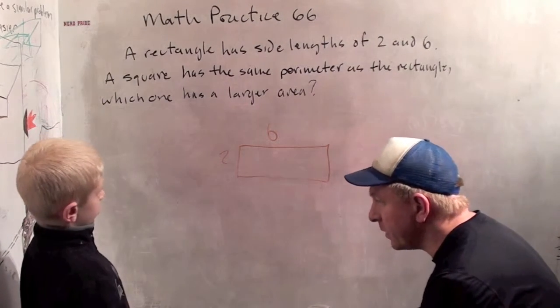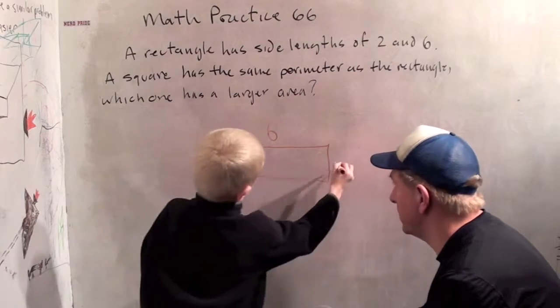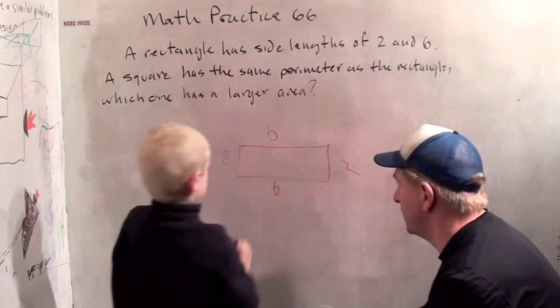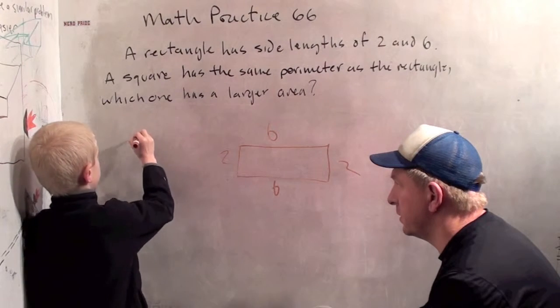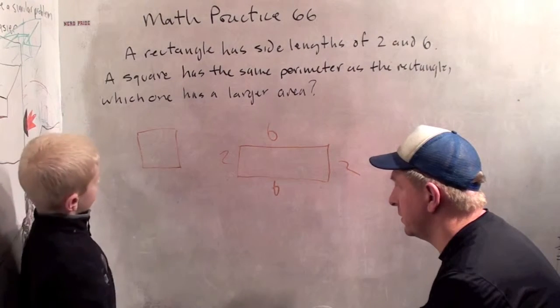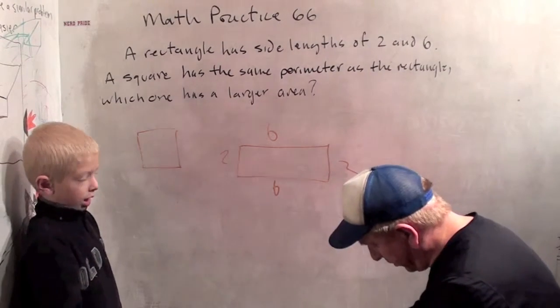Now, a square has the same perimeter as the rectangle. Now we draw a square here. It has to have the same perimeter as the rectangle. Yeah, it has to have the same perimeter.